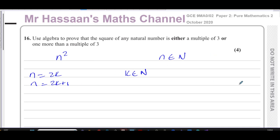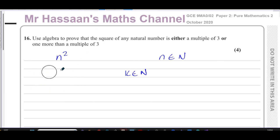The problem with using n = 2k and n = 2k + 1 is that when you put these into the expression, you're not able to bring out things in terms of multiples of three. When I square 2k I get 4k², and when I square 2k + 1 I get terms in 4k² and 2k — I can express those as multiples of two, but not multiples of three. So it's no good using 2k and 2k + 1.